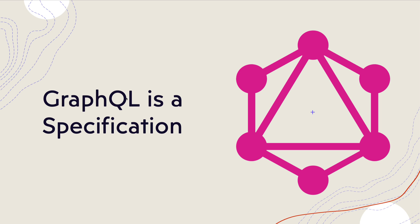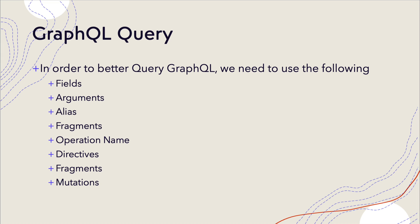GraphQL can be implemented in any language as long as it follows the GraphQL schema pattern. We've realized GraphQL is a graph query language for APIs, where clients call the GraphQL server using a query language. That query language has certain components: fields, arguments, aliases, fragments, operation names, directives, and mutations. These are the components within the query passed to the GraphQL server so it can resolve and return the data back to the calling client.